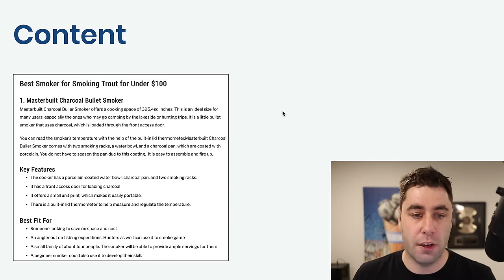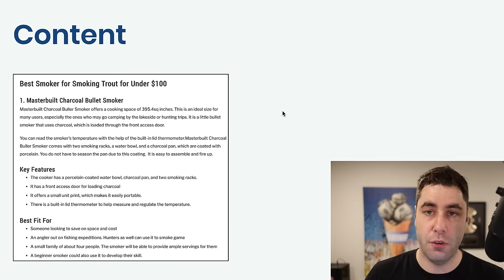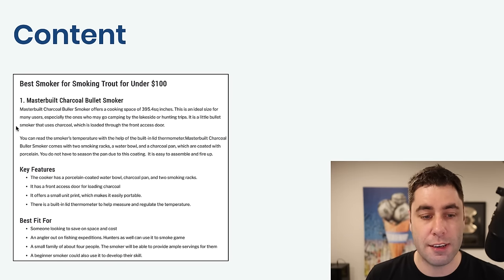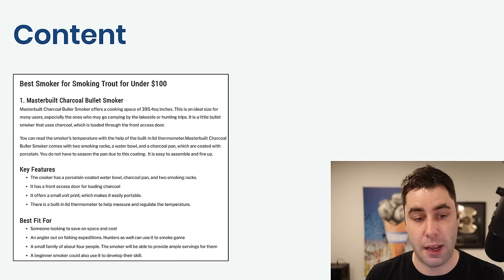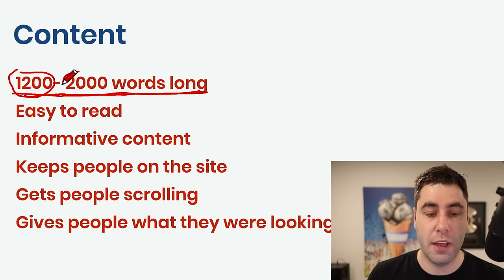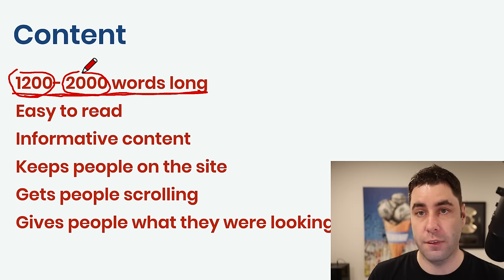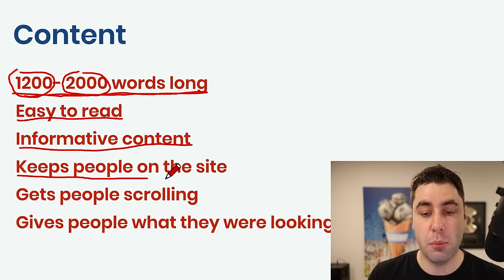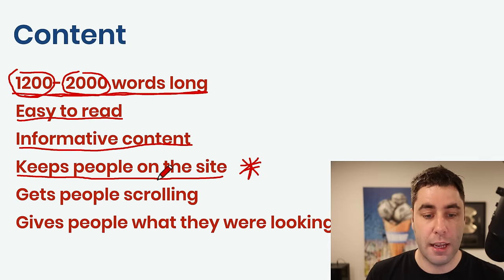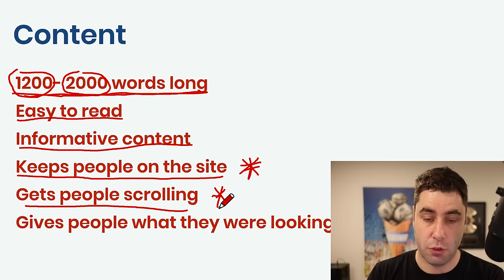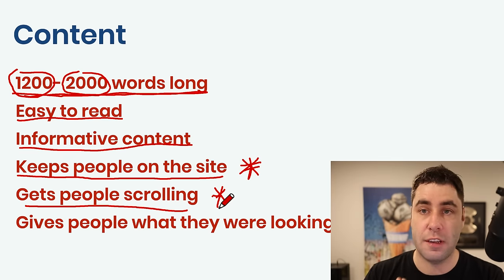The next thing is content — it's actually one of the most important things, because if you mess this up, your content's just not going to rank. There are a few criteria: you basically want to have articles that are 1,200 to 2,000 words long. We very rarely do an article under 1,200 words or over 2,000 words for these little mini AdSense websites. It has to be easy to read, informative content that keeps people on the site. It also gets people scrolling — this is very important. The more people scroll, the better signals it gives to Google.